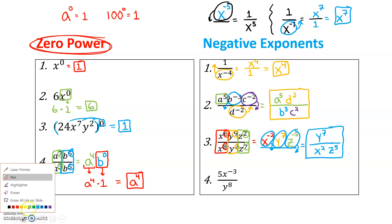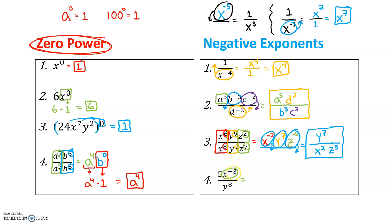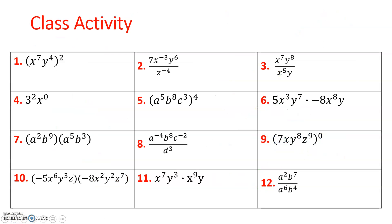For the last problem, the only issue is x to the negative third. Be careful — the negative three only belongs to the x, not the five. The five is perfectly fine where it is. But x to the negative third has to drop down to the denominator and turns into a positive three. Y to the eighth doesn't need to move — it's a positive exponent sitting in the denominator, so no need to change it. We'll write this a little neater by scooting that five toward the center. There's your final answer.